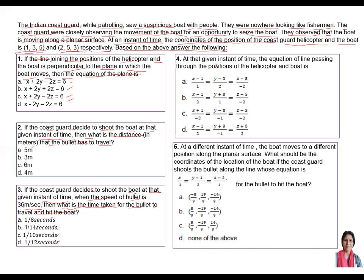Part four: At that given instant of time, find the equation of the line passing through the position of the helicopter (1,3,5) and the boat (2,5,3). The possible answers are: (x−3)/1 = (y−3)/2 = z−2; (x−1)/2 = (y−3)/1 = (z−3)/(−2); (x+1)/(−2) = (y−2)/(−1) = z−1/(−2); or (x−1)/2 = (y+3)/(−1) = (z−5)/2.